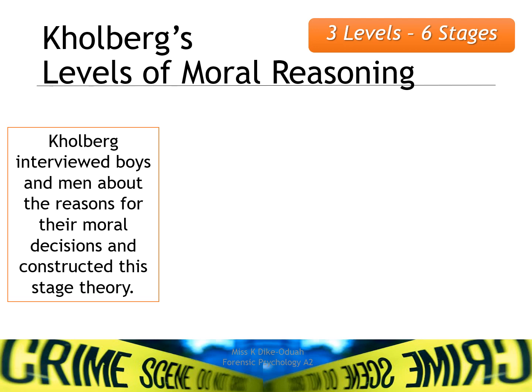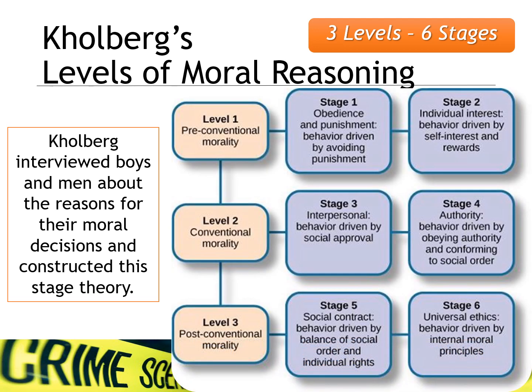He came up with a six-stage model broken down into three levels: level one, pre-conventional morality; level two, conventional morality; and level three, post-conventional morality.